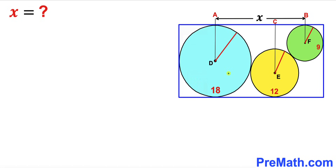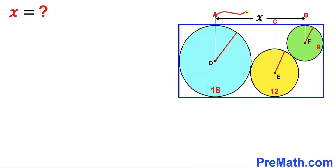In this video we have three circles of different dimensions fully inscribed in a blue rectangle, such that the radius of the blue circle is 18, the radius of the yellow circle is 12, and the radius of the green circle is 9. Our task is to find the distance x between points A and B.